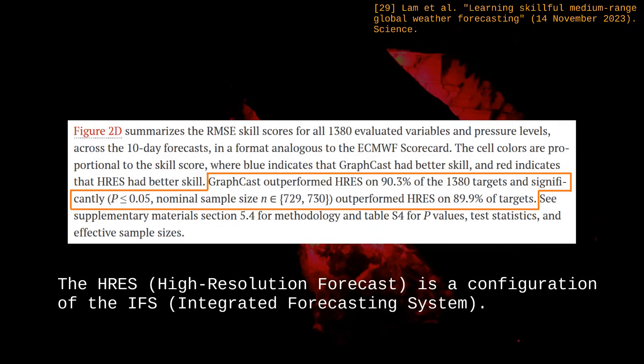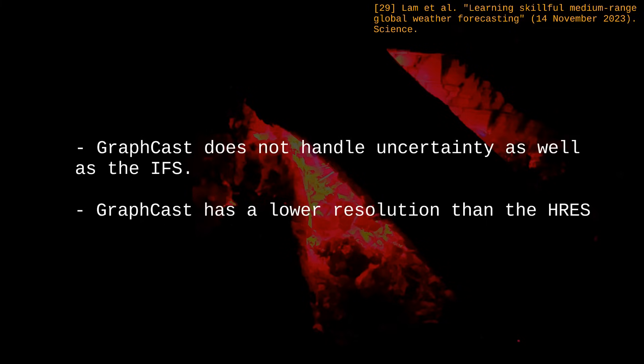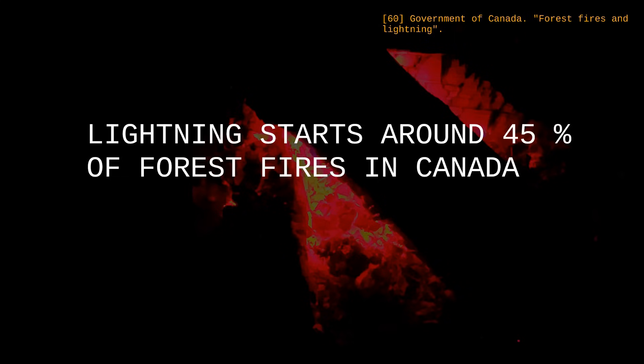But GraphCast is still pretty good. It is on par with the Integrated Forecasting System, the gold standard for medium-range weather predictions. The IFS essentially functions as a physics-based model — it has to solve a lot of complex equations, so its predictions are computationally expensive. Meanwhile, GraphCast takes a lot of time to train, but it learns to extract relevant features from data to make forecasts, which makes its predictions much faster. GraphCast has some drawbacks: it handles uncertainty more poorly than the IFS, and it has a lower spatial resolution. But it will certainly get better over time. Global weather prediction models like GraphCast are useful for fire control agencies — for instance, they help anticipate where lightning might start fires. But machine learning has also been applied specifically to wildfire prediction.